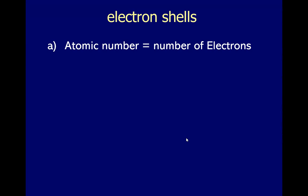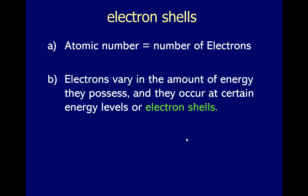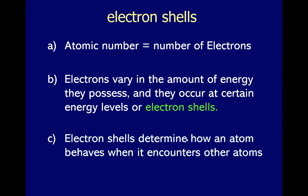First, the atomic number of a certain element is always equivalent to the number of electrons if the charge is neutral. Second, electrons vary in the amount of energy they possess and they occur at certain energy levels or electron shells. Third, electron shells determine how an atom behaves when it encounters other atoms, because electrons are located in the outermost part of the atom.